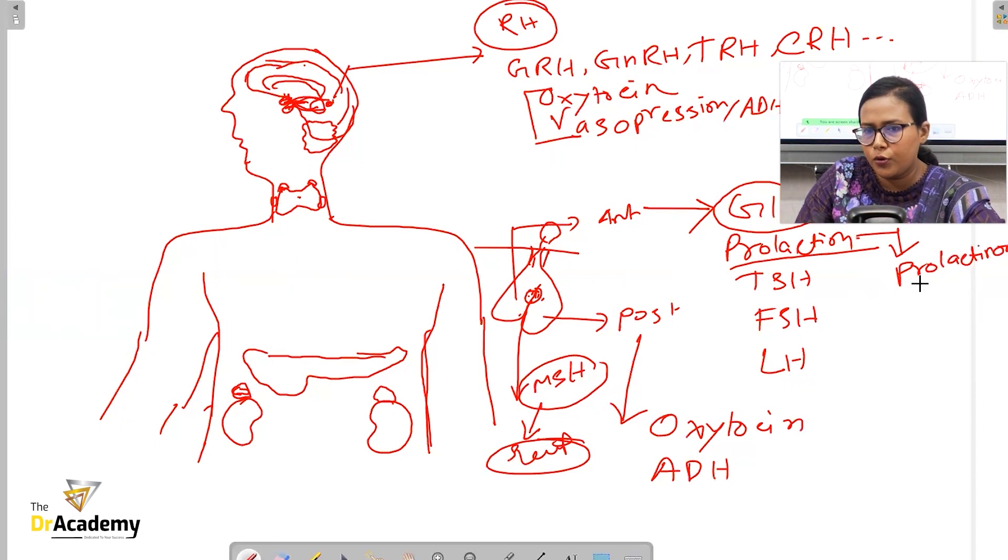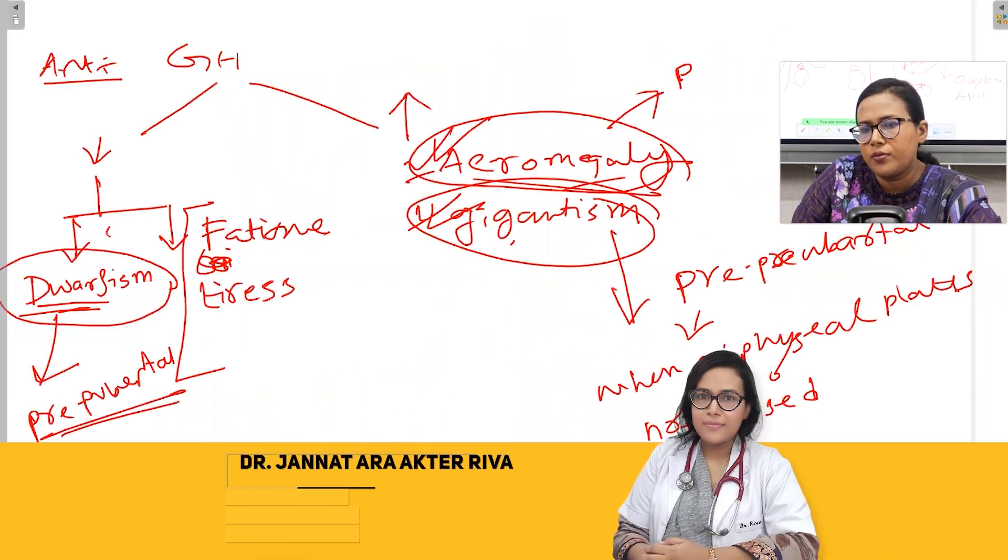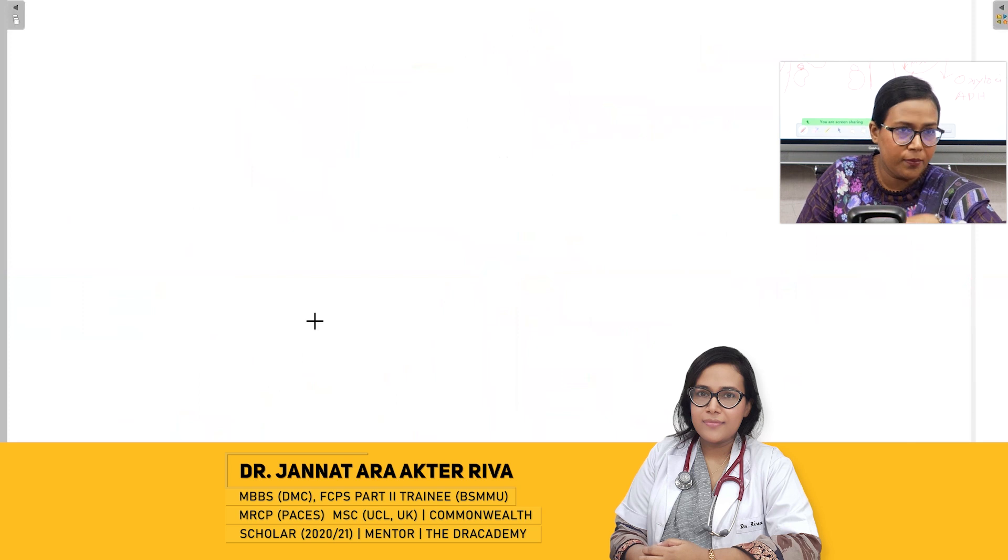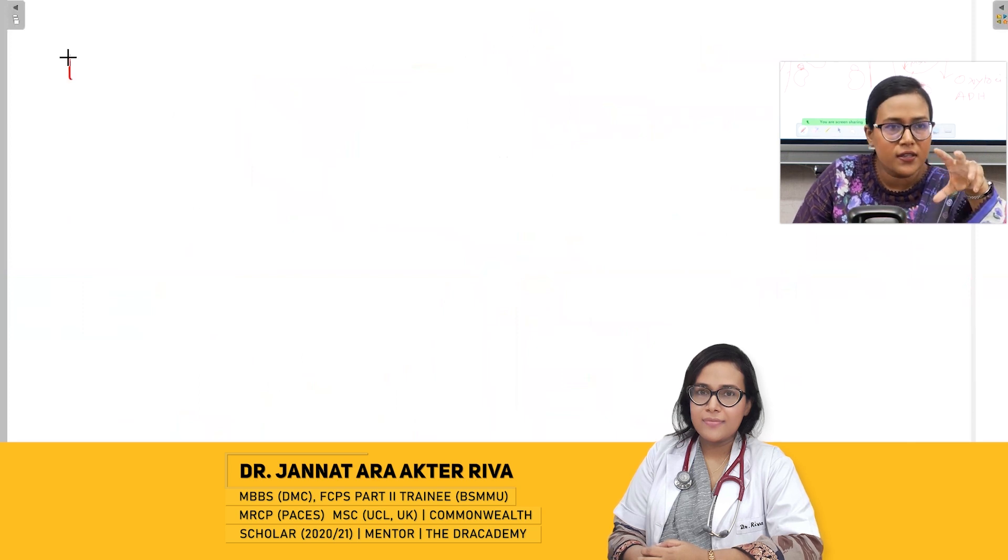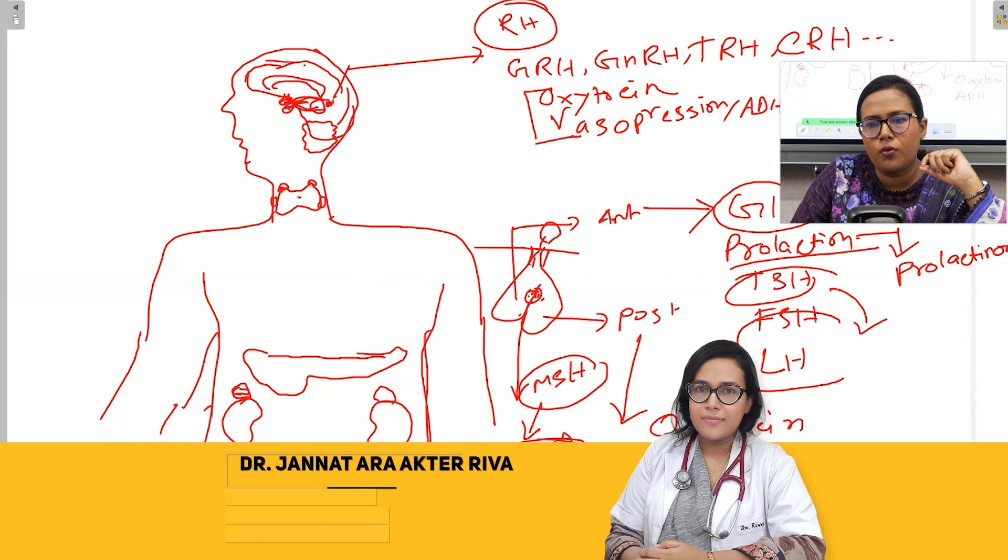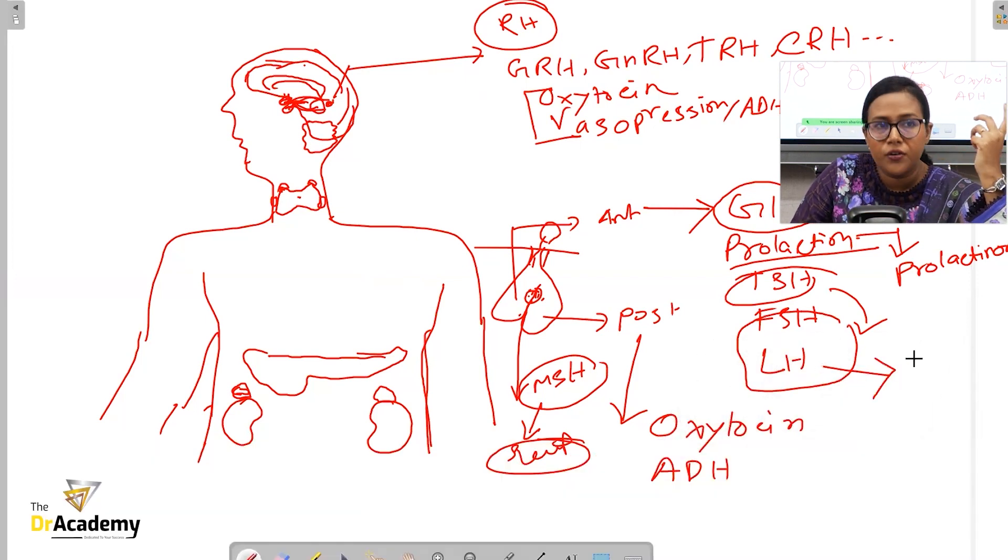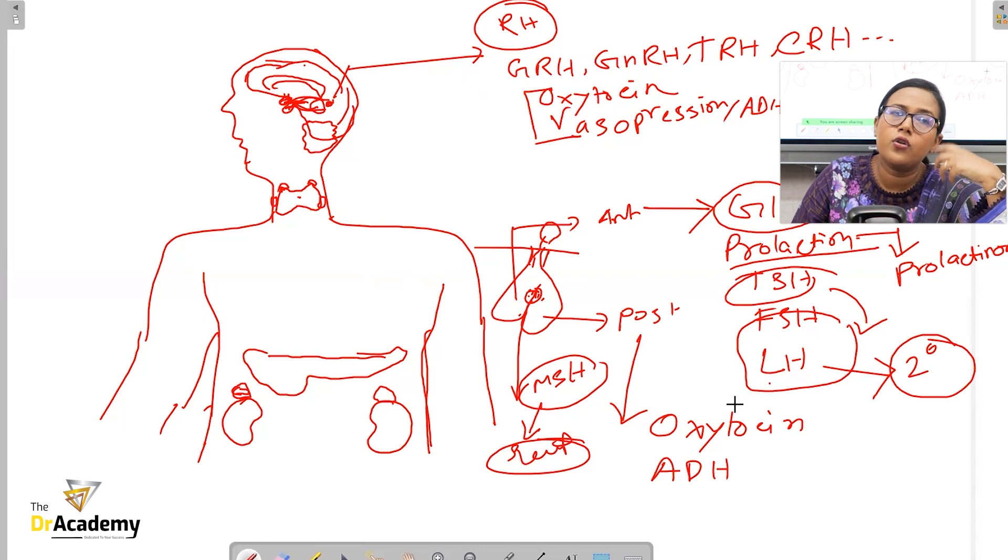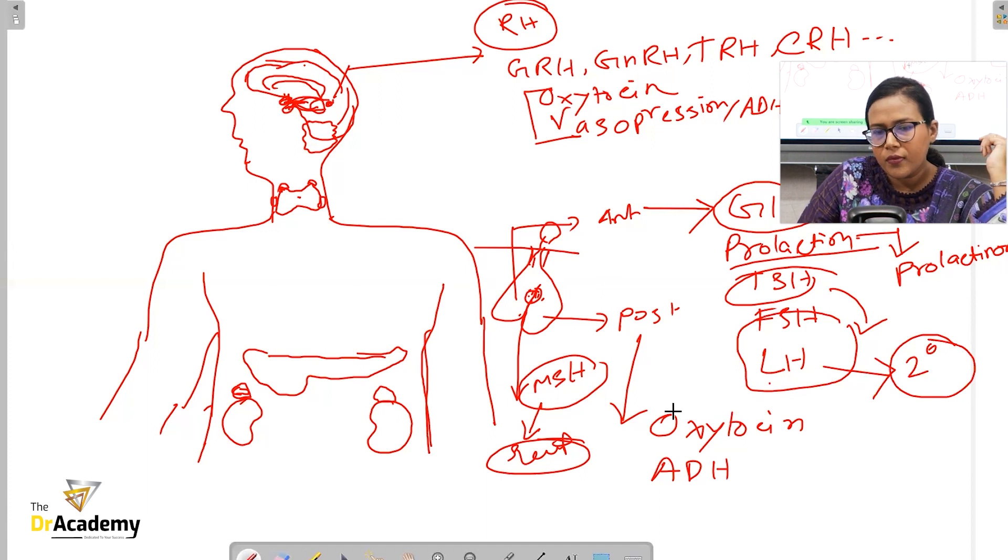Next is TSH abnormality - it can be hypo or hyperthyroidism, and we'll discuss this today. The follicle stimulating hormone (FSH) and luteinizing hormone (LH) are particularly important for secondary sexual characteristics. If a person is deficient of FSH or LH, they will lose their sexual drive. In females, it might cause oligomenorrhea or amenorrhea, menstrual problems, low mood, and loss of sexual desire. In males, erectile dysfunction. These are problems associated with low levels of FSH or LH.